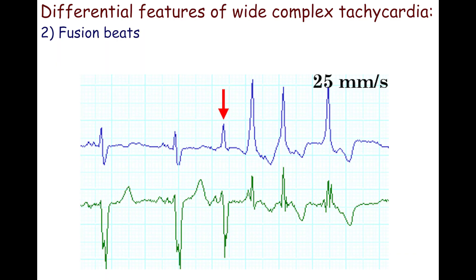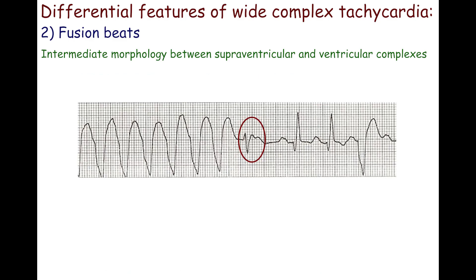The second feature is fusion beats. They are QRS complexes of intermediate morphology between supraventricular and ventricular complexes. This means that ventricles are depolarized simultaneously by two impulses, supraventricular and ventricular ones. So, certain portion of ventricles is depolarized by the ventricular ectopic impulse, while another one are depolarized by impulse of supraventricular origin. Fusion beats are highly specific for ventricular tachycardia.